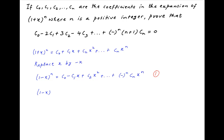Now we know that the binomial expansion of (1 - x)^(-1) is equal to 1 + x + x^2 + ... + x^n + and so on.